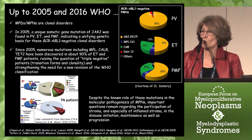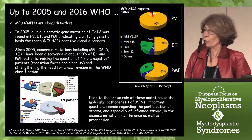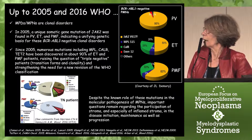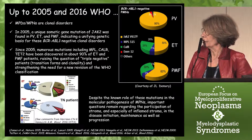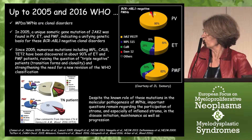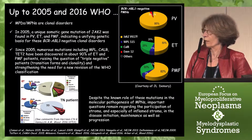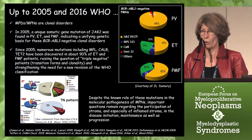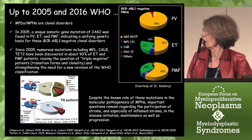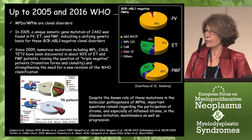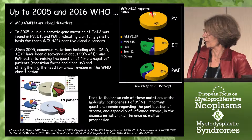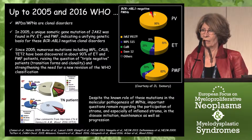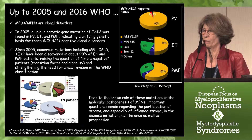Further studies have demonstrated that those myeloproliferative neoplasms are clonal diseases, and in 2005, a unique somatic gene mutation of JAK2 was found in PV, ET, and PMF patients by two groups — the group of William Vainchenker and Tony Green — indicating a unifying genetic basis for this BCR-ABL negative syndrome.